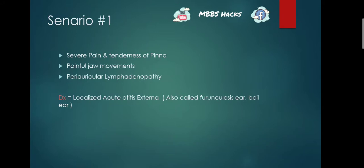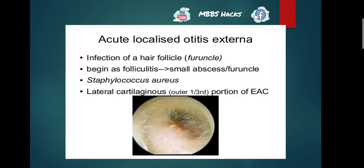In this lecture we are not discussing the explanation of each topic; we are just practicing diagnosis of scenarios and the key points to remember while diagnosing them. Briefly, localized acute otitis externa is an infection of a hair follicle, also known as a furuncle. It begins as folliculitis — a small abscess or furuncle. The major causative agent is Staphylococcus aureus, and it involves the outer one-third, which is the cartilaginous portion of the external auditory canal.